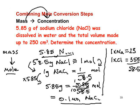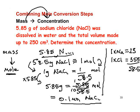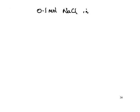At this stage, we're halfway through the calculation. We have changed mass into moles. We're now going to have to change from moles into concentration. We have 0.1 mol of NaCl dissolved in water and made up to 250 cubic centimetres. You may recall from session one the volumetric flask concept — this is called a volumetric flask.